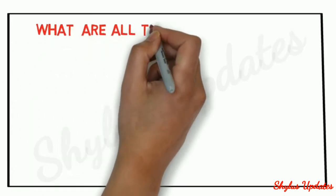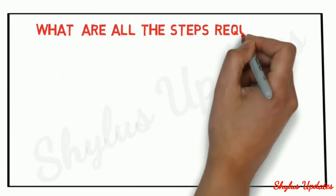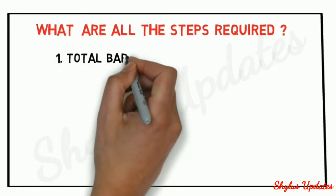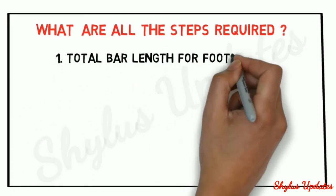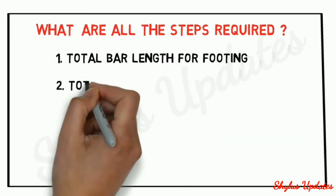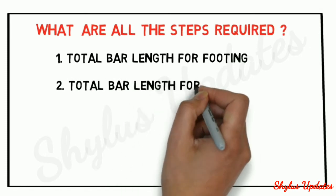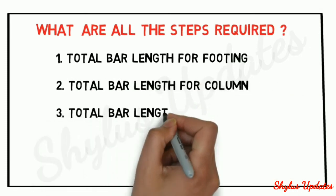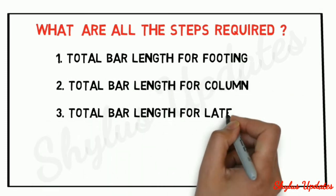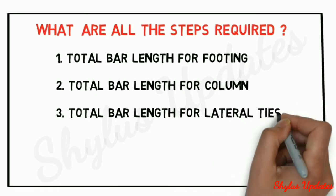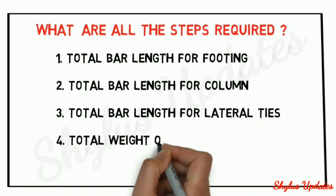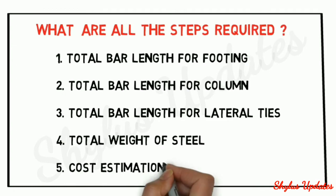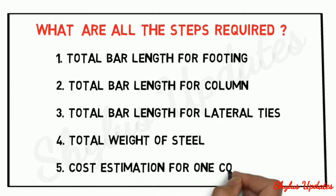What are all the steps required? Step 1: Total bar length for footing. Step 2: Total bar length for column. Step 3: Total bar length for lateral ties. Step 4: Total weight of steel. Step 5: Cost estimation for one column.